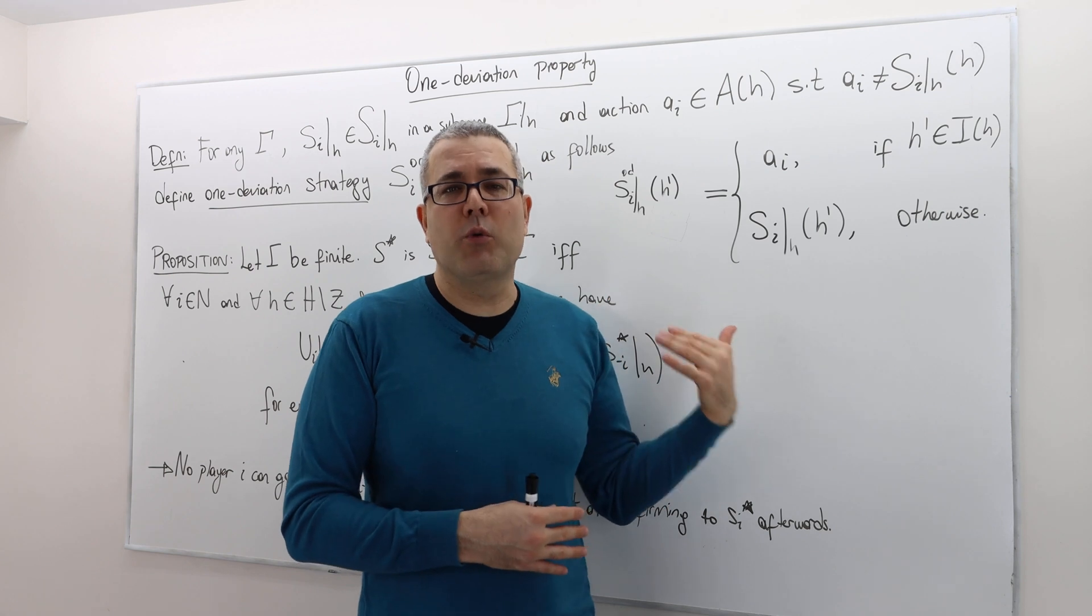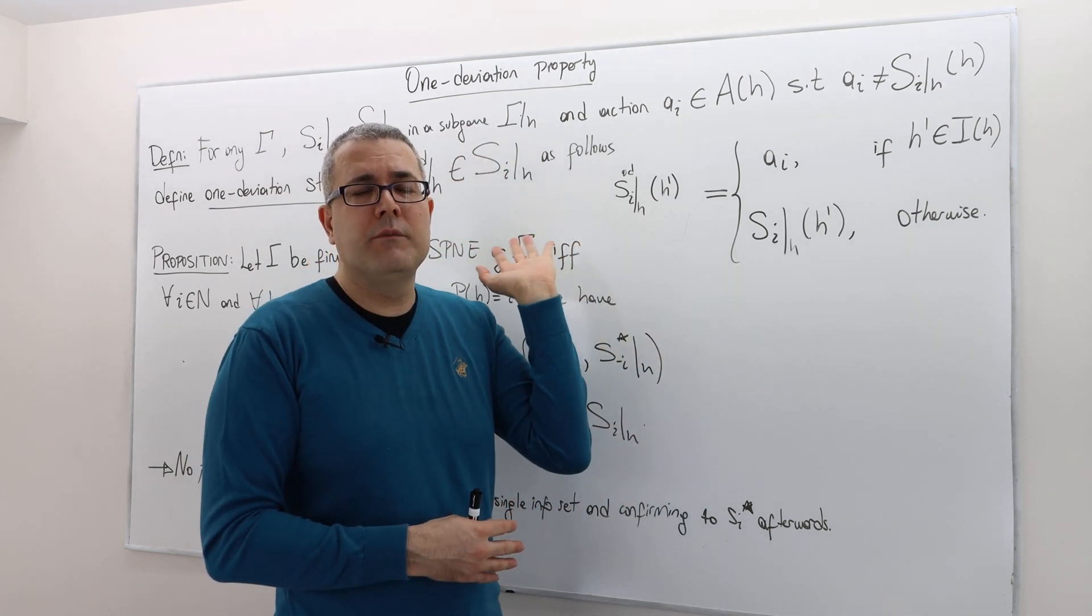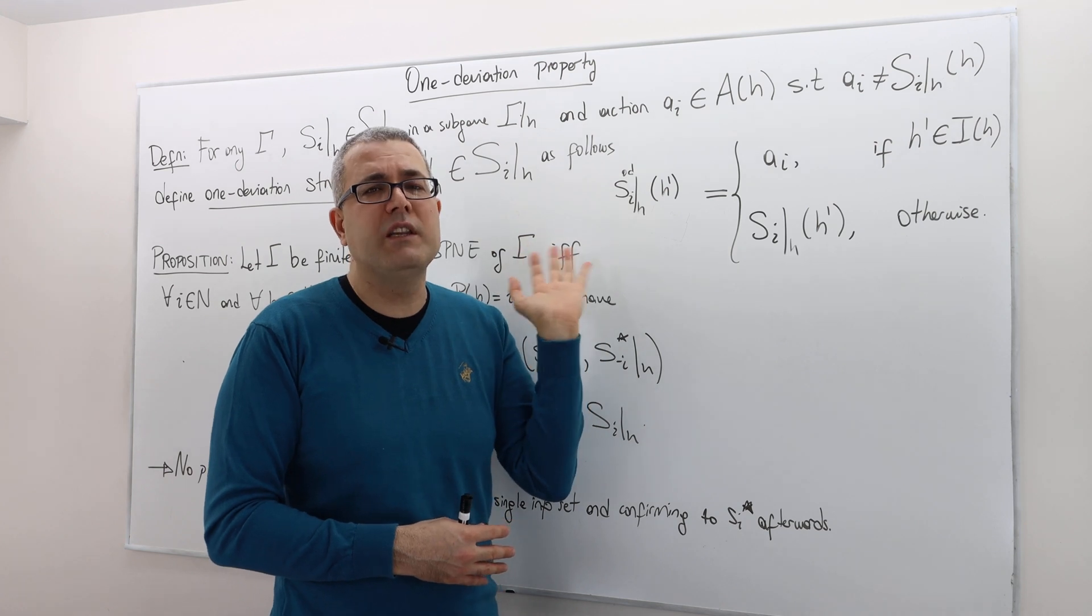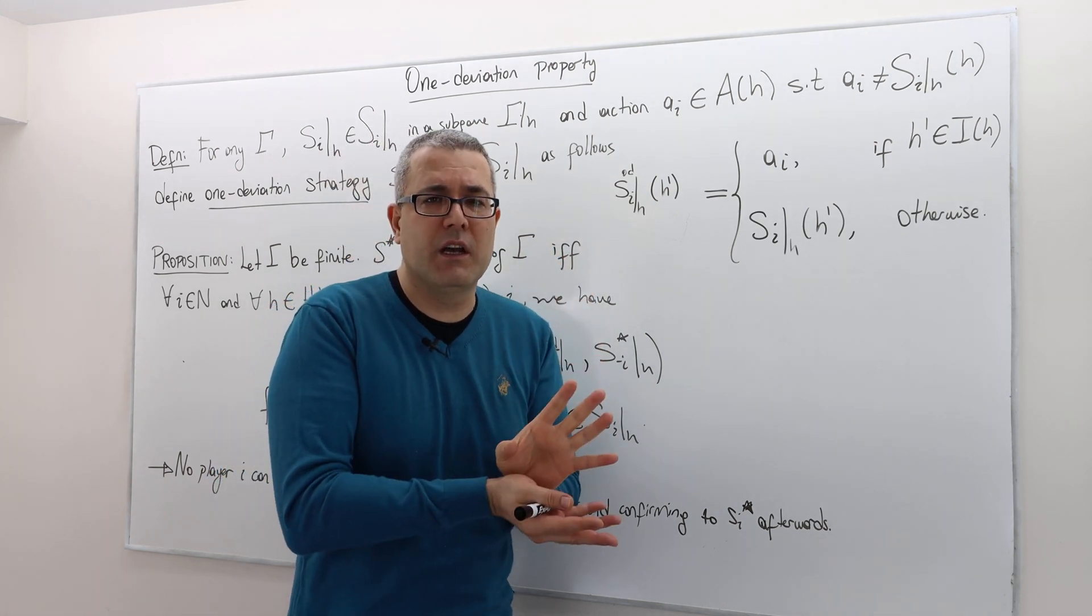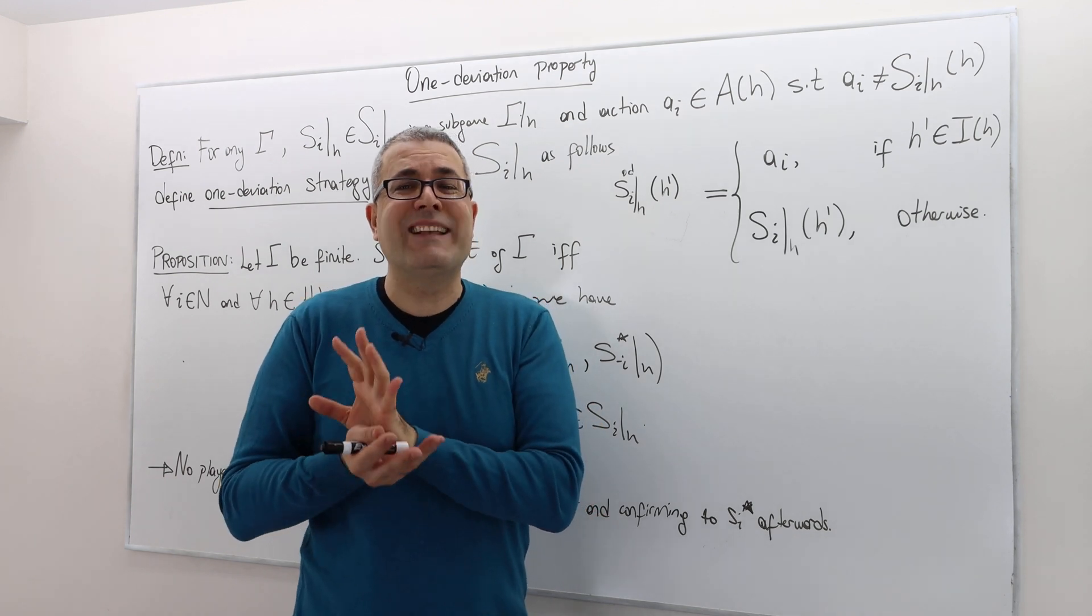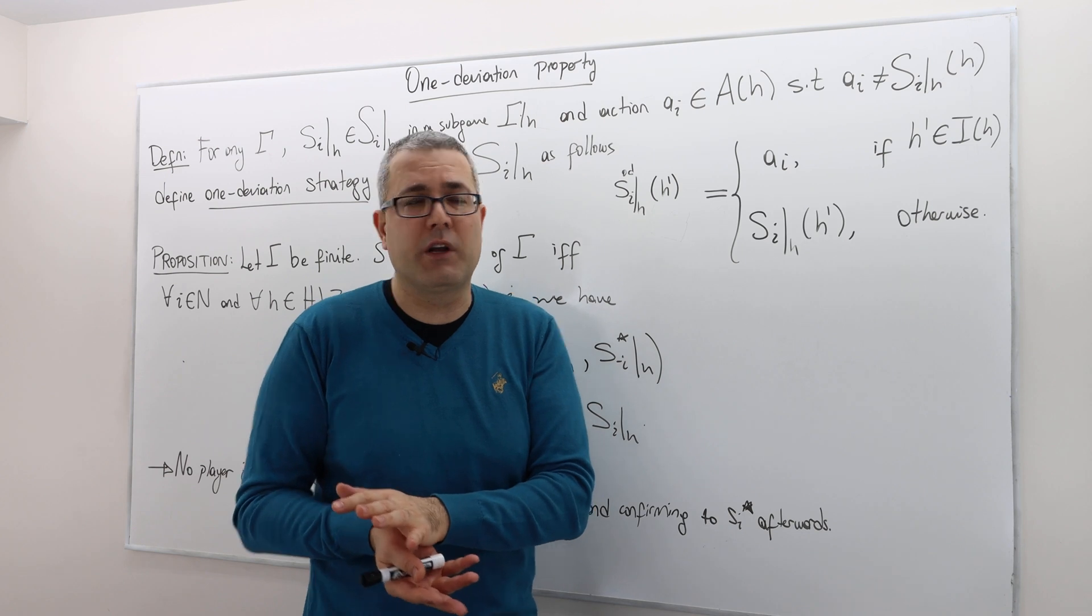So this is exactly what we do. This is what is called one shot deviation or one deviation property - it's kind of applying backward induction into any extensive form game, whether it has perfect information or not.